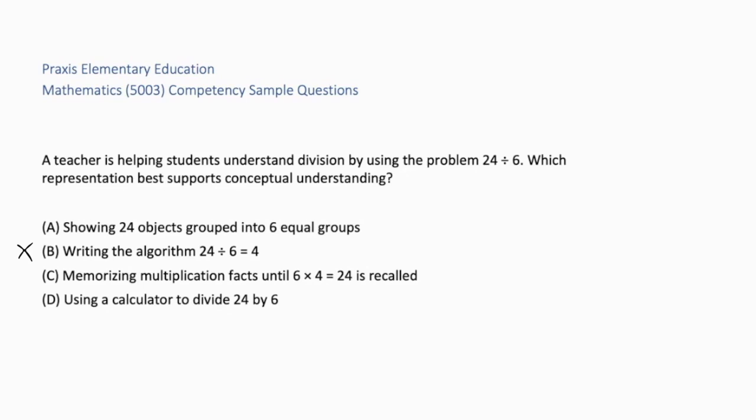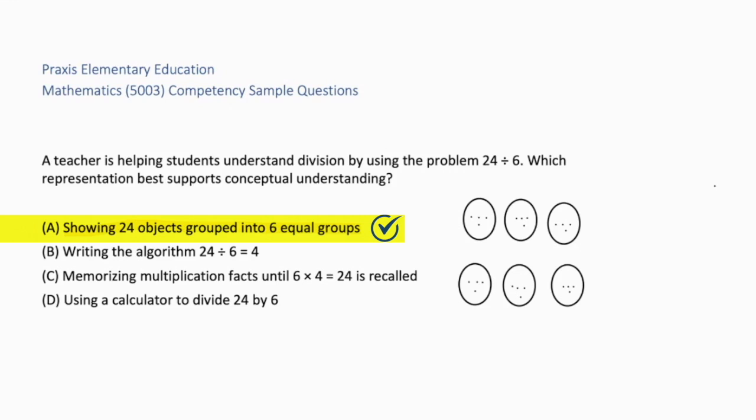B, writing the algorithm skips conceptual understanding. C, relies only on rote memorization. D, technology bypasses number sense. The correct answer is A, showing 24 objects grouped into 6 equal groups. Concrete manipulatives help students understand division as grouping.